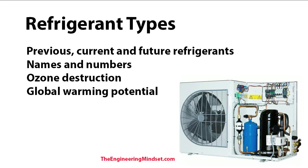Hey there guys, Paul here from TheEngineeringMindset.com. In the last video we learned how refrigerants work and how they move thermal energy around a refrigeration system. In this video we're going to learn a bit more about refrigerants — the different types, the previous, current and future refrigerants, some of the names and numbers, and also the pros and cons, especially the environmental impact: ozone destruction and global warming potential. If you're working in HVAC, studying to get into HVAC, or even building services, you really should know these basics.